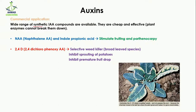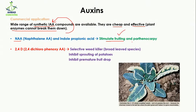There are many commercial applications of auxins due to synthetic indole acetic acid compounds, which are cheap and effective because plant enzymes cannot break them down. For example, NAA (naphthalene acetic acid) and indole propionic acid stimulate fruiting, fruit growth, and parthenocarpy — the formation of fruit without fertilization.